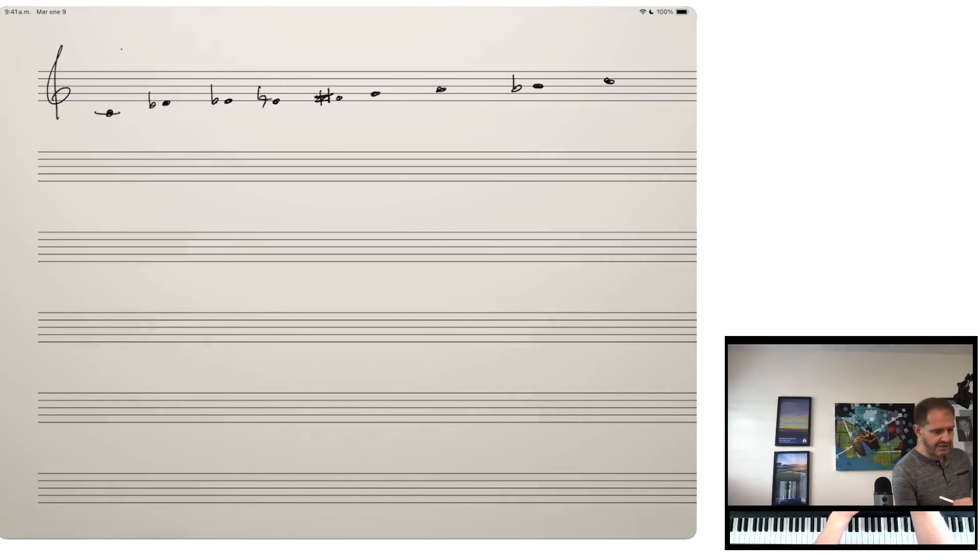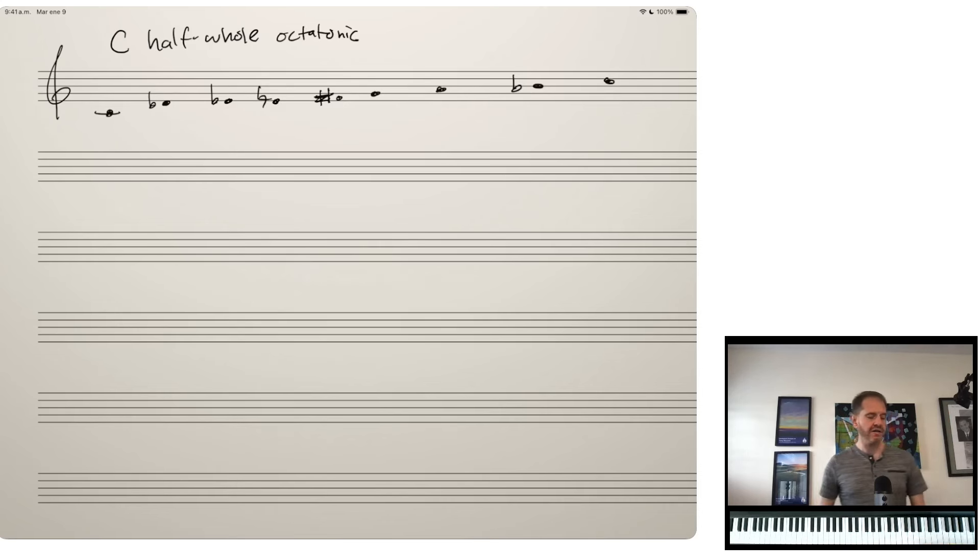So this is our C half-whole octatonic scale. If you're not familiar with this scale, start studying. No, I'm just kidding. The way that we create it is we alternate between half steps and whole steps. And we call it the half-whole octatonic scale because it starts with a half step. We could make also a whole half octatonic scale, which would start with a whole step. And it's really a different scale. Octatonic is a little bit more general. It just means you've got seven notes.